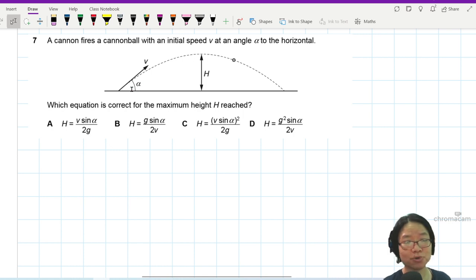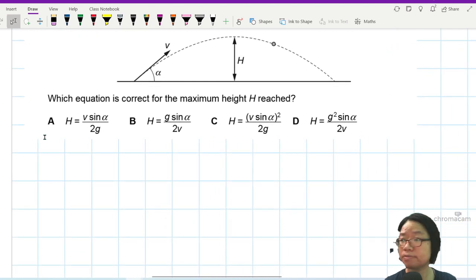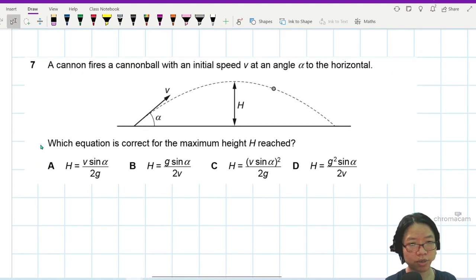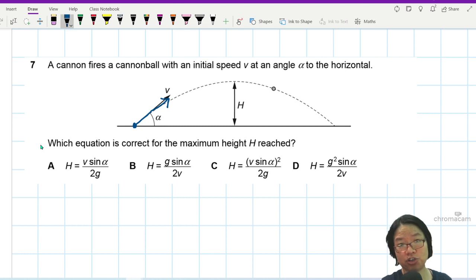So basically what I'm doing is I'm shooting a projectile which is a ball with a velocity of V with an angle of alpha. Which equation is correct for the maximum height reached H? So you want to find H. There are three methods.